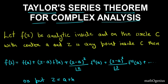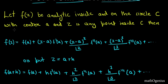So what does this theorem tell us? This theorem tells us that let f(z) be analytic inside and on the circle C with center a, and z is any point inside the circle C. Then f(z) can be expanded as: f(z) = f(a) + (z−a)f'(a) + (z−a)²/2! · f''(a) + (z−a)³/3! · f'''(a) + ...